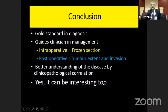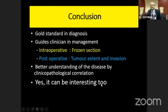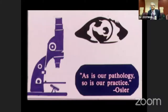In summary, the goal of ophthalmic pathology is to be the gold standard in diagnosis. It guides the clinician in management through intraoperative frozen section, postoperative tumor extent and invasion assessment, and better understanding of disease by clinical-pathological correlation, which can enrich the knowledge of any ophthalmologist. Yes, it can be interesting too. As William Osler said, 'As is our pathology, so is our practice,' which cannot be more true.